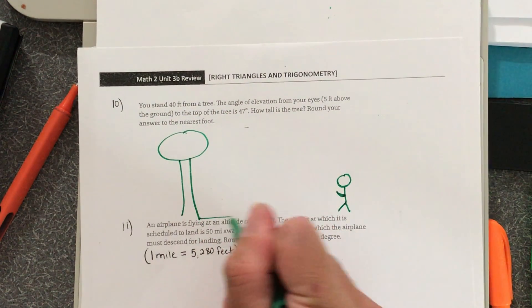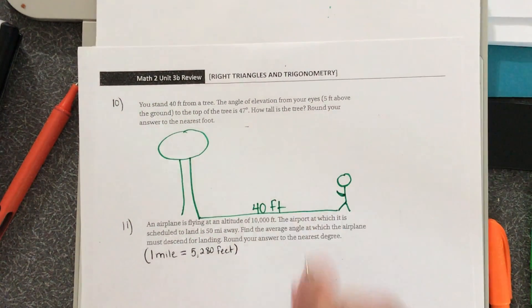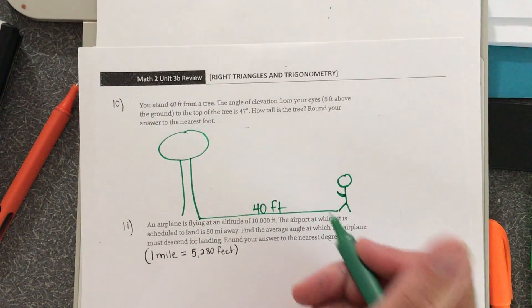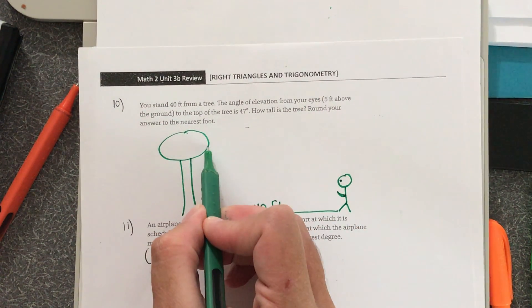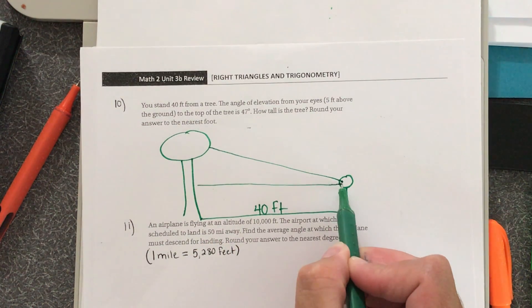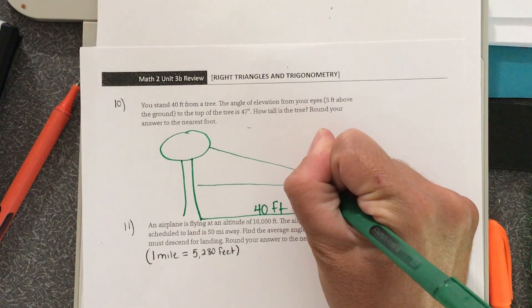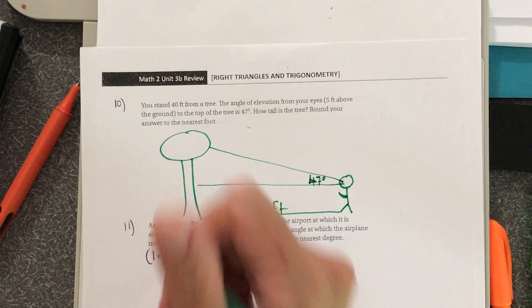You are standing 40 feet away from the tree, and the angle of elevation from your eye to the top of the tree is 47 degrees. How tall is the tree?